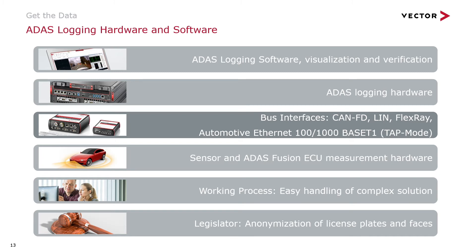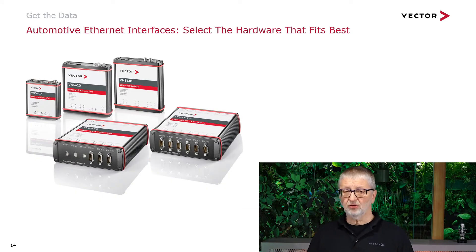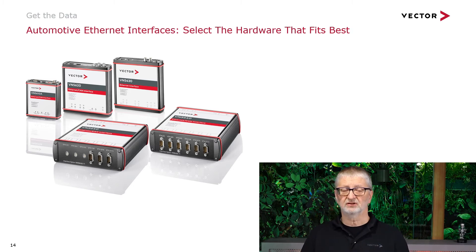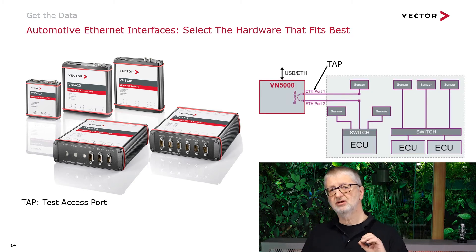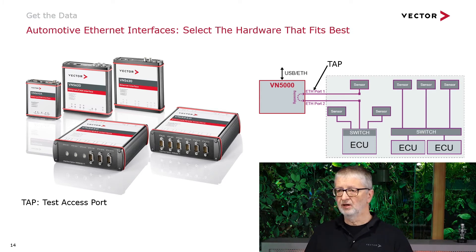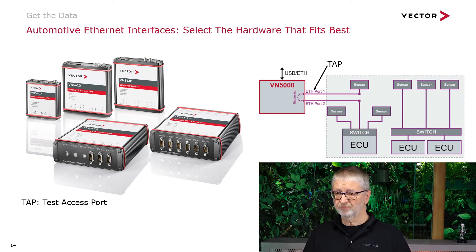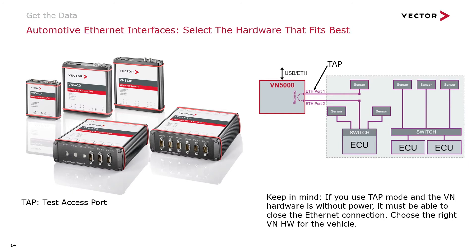You also need bus interfaces — CAN FD, FlexRay, and all that kind of stuff. Vector has all these hardware interfaces for well-known buses. For Ethernet interfaces, you can see some of them in the picture. But keep in mind: when selecting the right hardware for the vehicle, make sure it is built and designed for vehicle usage. We have something called tap mode, because we have to interrupt the automotive Ethernet line when measuring it, and not every hardware is built for this scenario.